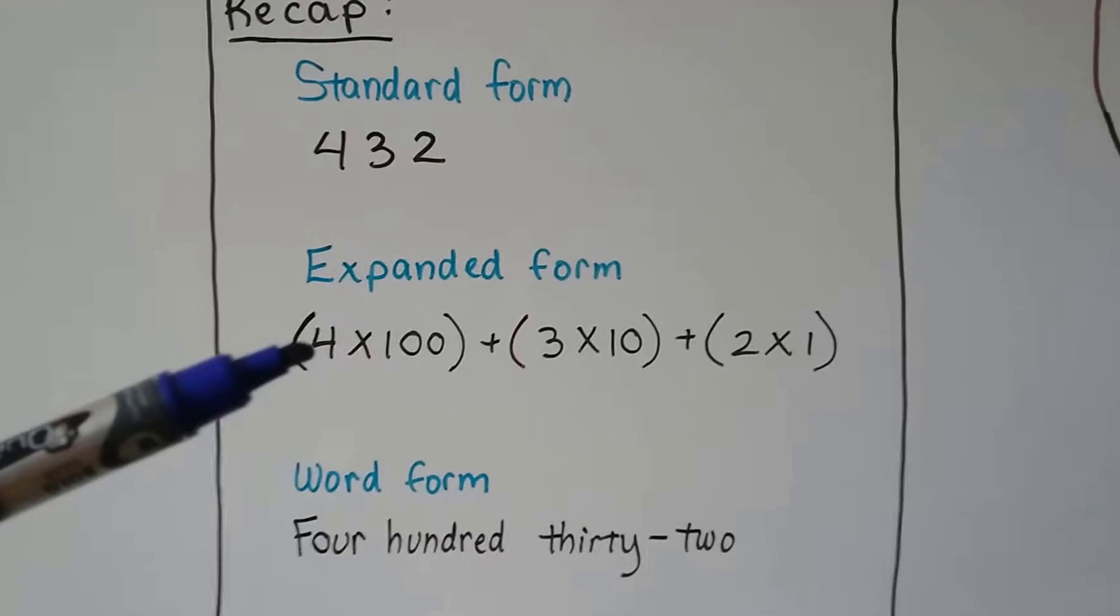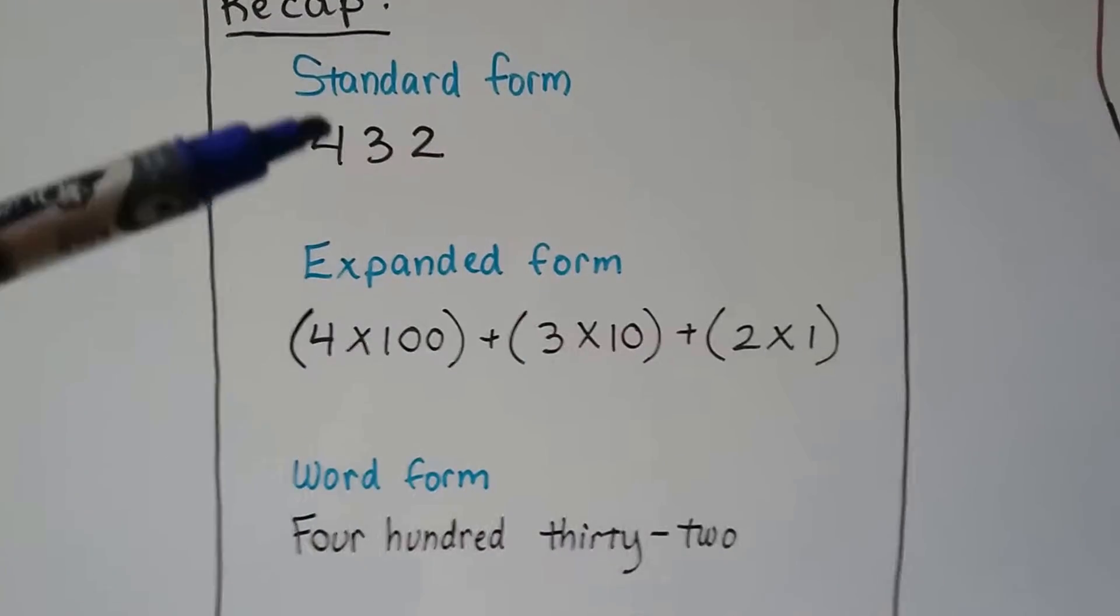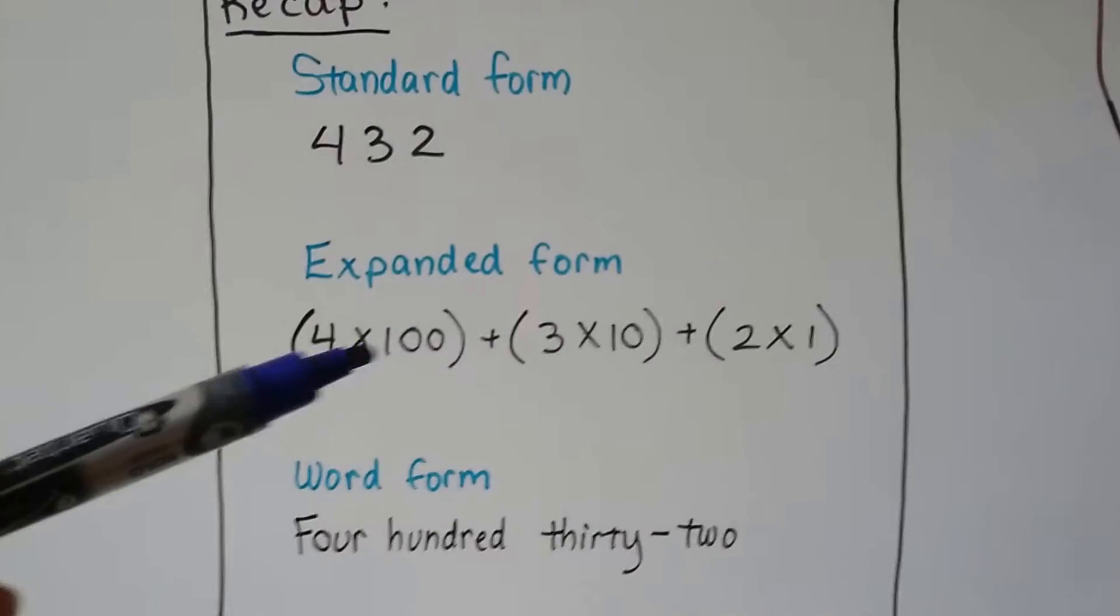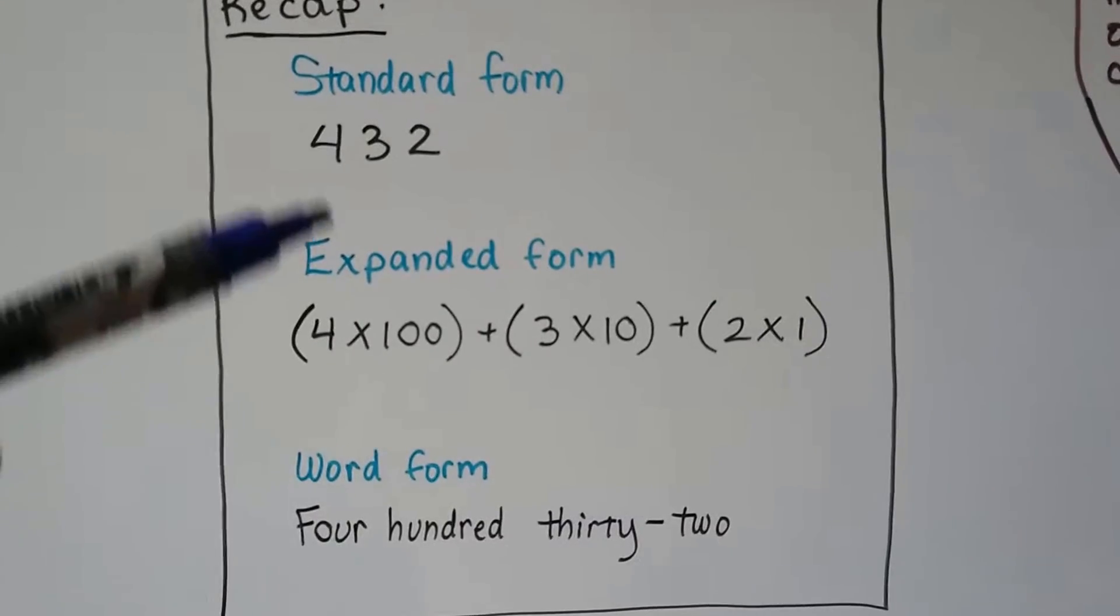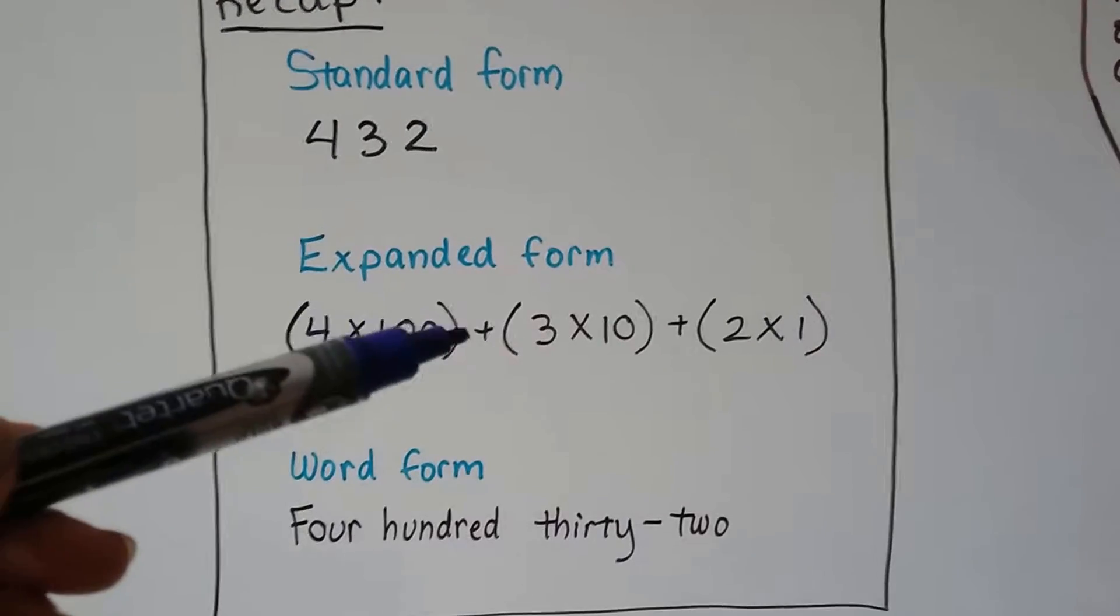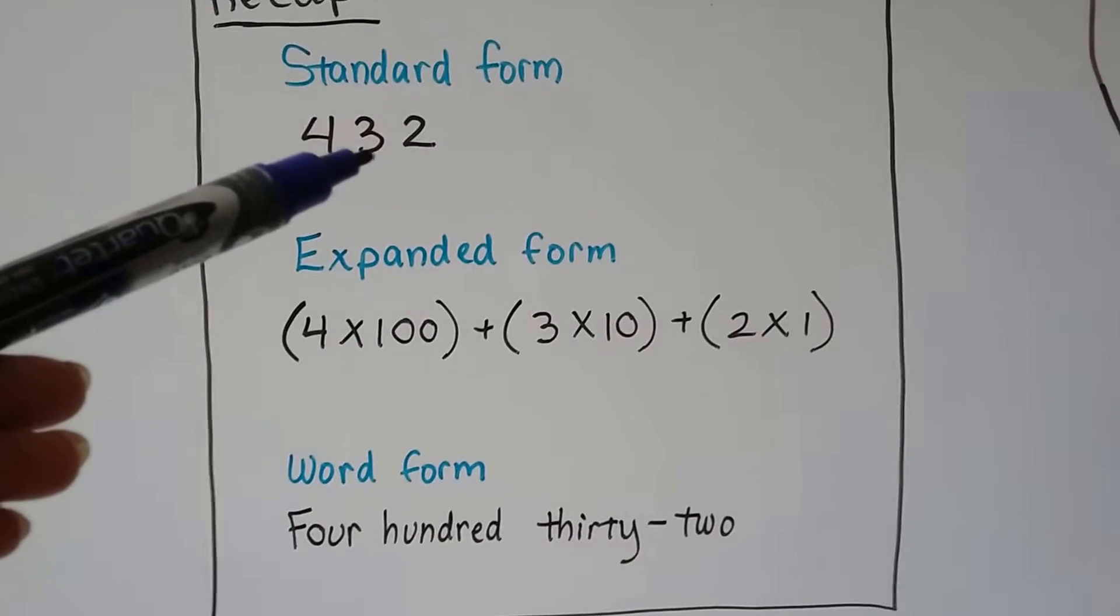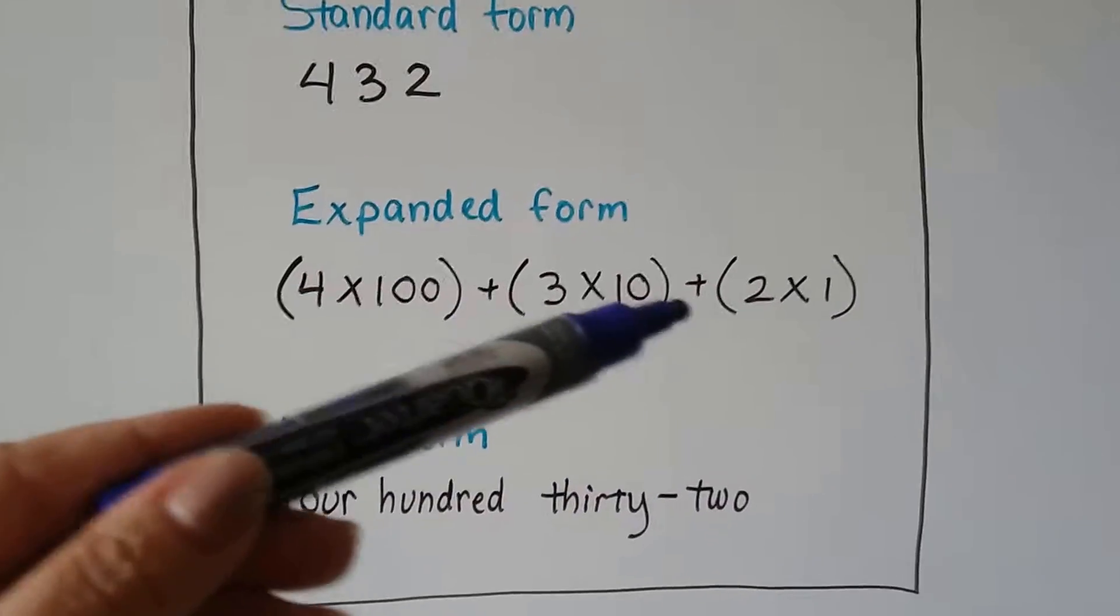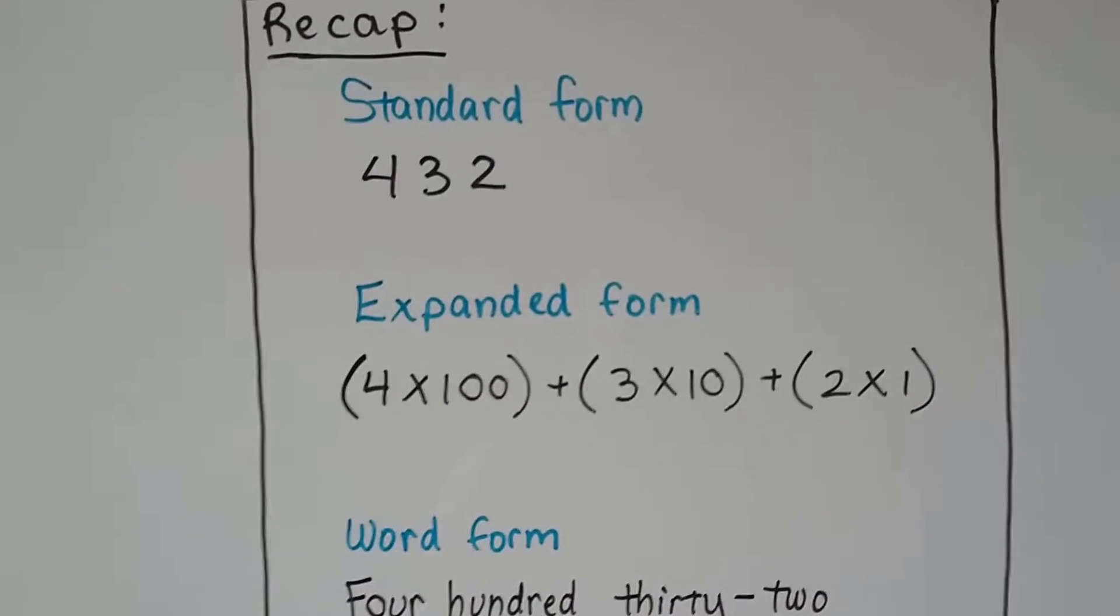In expanded form, we multiply the digit in that place value times that place value. So this would be the hundreds place, we would do four times one hundred, plus three times ten, because that's the tens place, plus two times one, because that's the ones place.